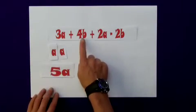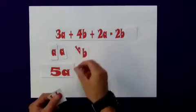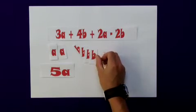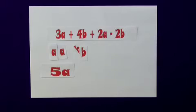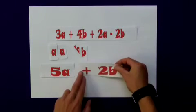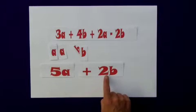Now I can consider the b's. I've got four of them here: 1, 2, 3, 4. But here I'm actually going to subtract two of them. So that will actually only leave me with two b's. So my expression is now simplified to 5a plus 2b.